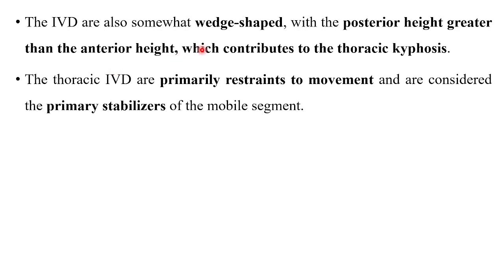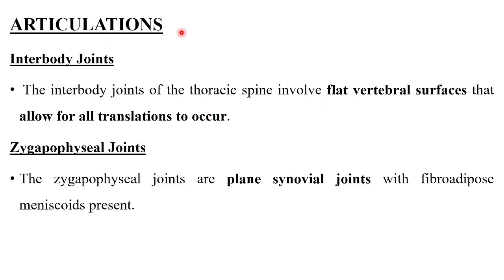The intervertebral discs are also somewhat wedge-shaped with the posterior height greater than the anterior height, which contributes to the kyphotic posture of the thoracic region. The thoracic intervertebral discs are considered the primary stabilizers of the mobile segments.